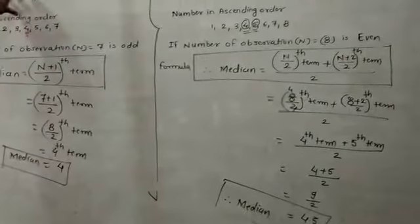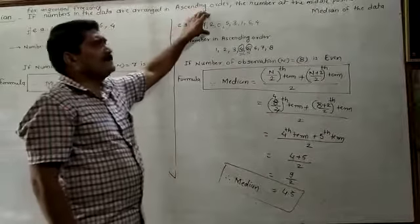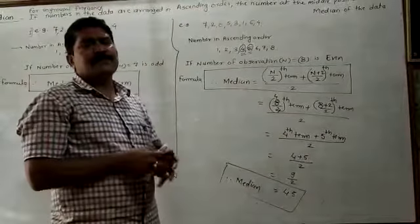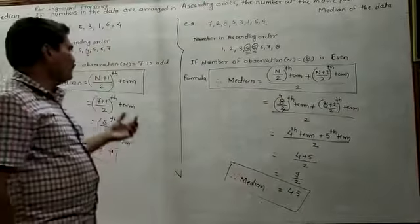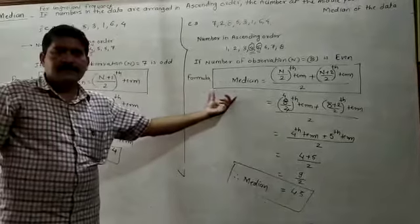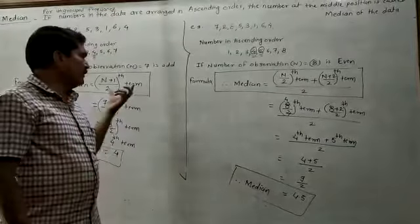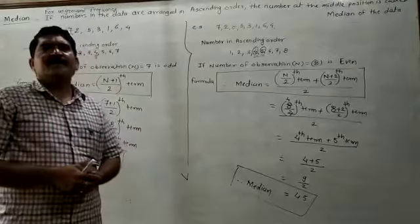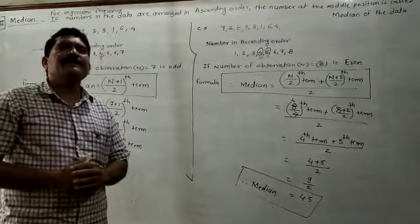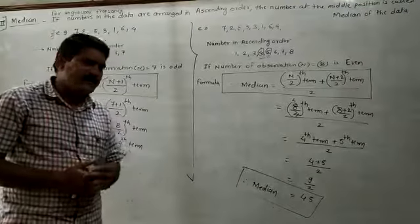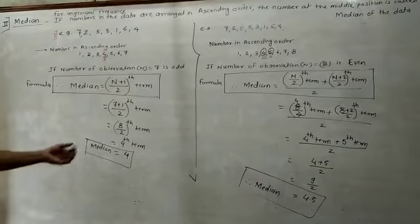If the data is not in the grouped frequency distribution but in the ungrouped frequency distribution, you write the data in ascending or descending order and use the formula to find the median. In 10th standard, examples will involve the grouped frequency distribution table, which I will teach in the next lecture. Write all these things properly in your notebook. Thank you.